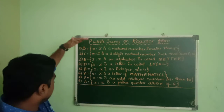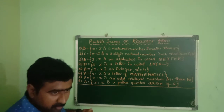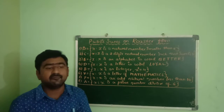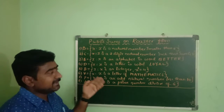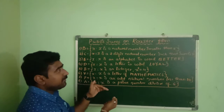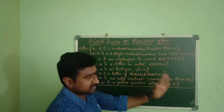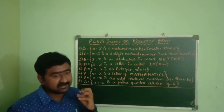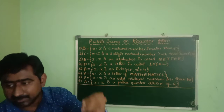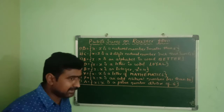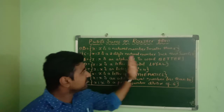We have 8 sums. If you observe on the board, you will find 8 important models that belong to the conversion from the given set builder form. We need to convert these 8 sums into roster form. There are many statements in the set builder form that we can convert.